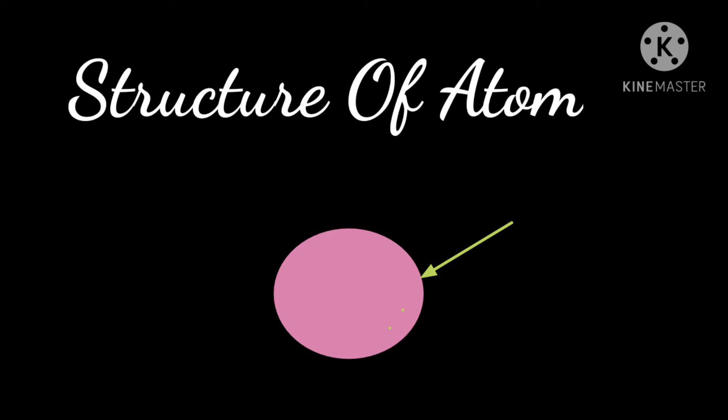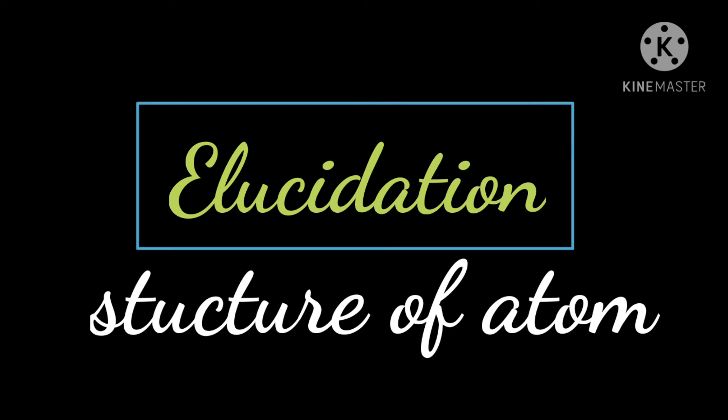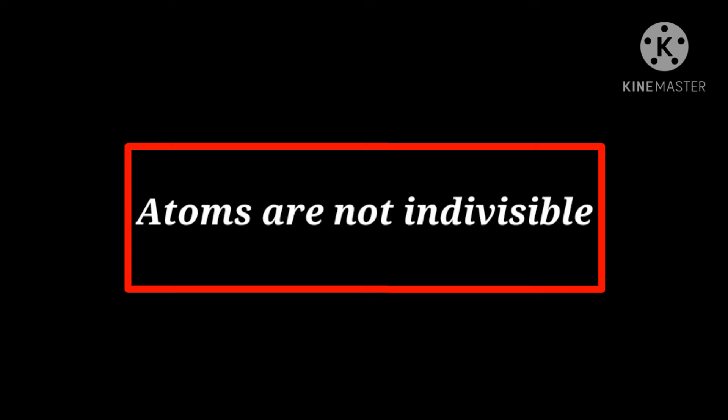The major challenge before scientists at the end of the 19th century was to reveal the structure of the atom as well as to explain its important properties. The elucidation of the structure of the atom is based on a series of experiments.